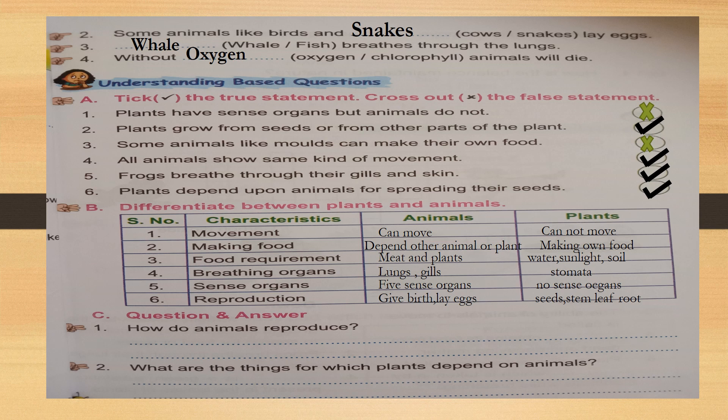Understanding best question: tick the true statement and cross out the false statement. First: plants have sense organs but animals do not. Is it true? No — give cross. Plants do not have sense organs; animals do. Very good children.